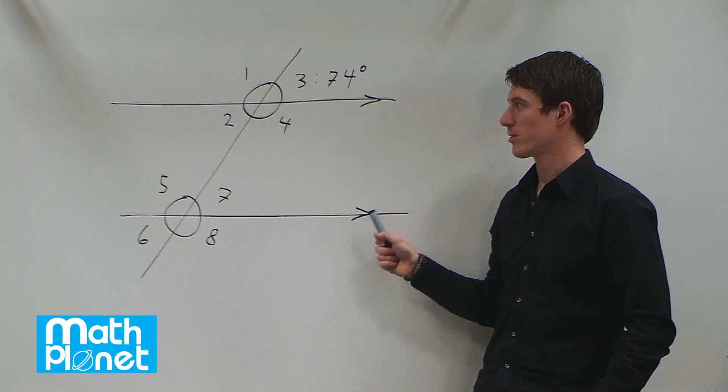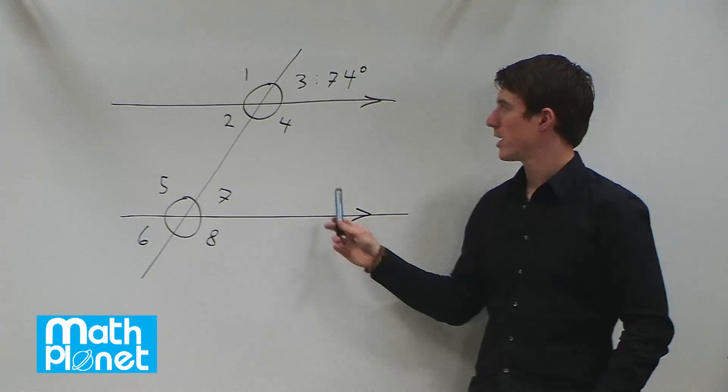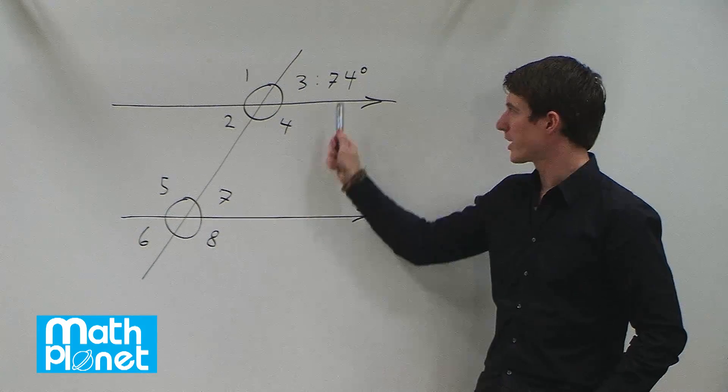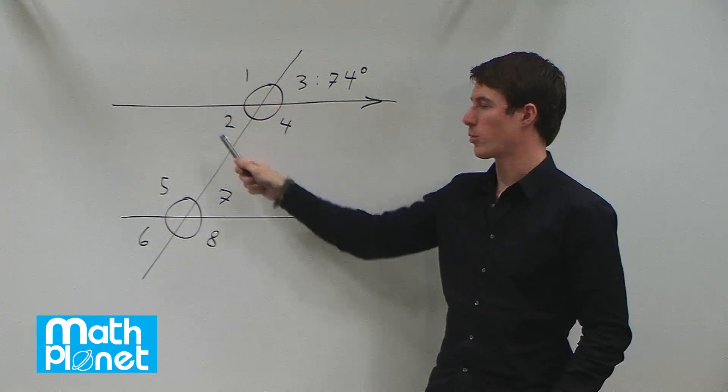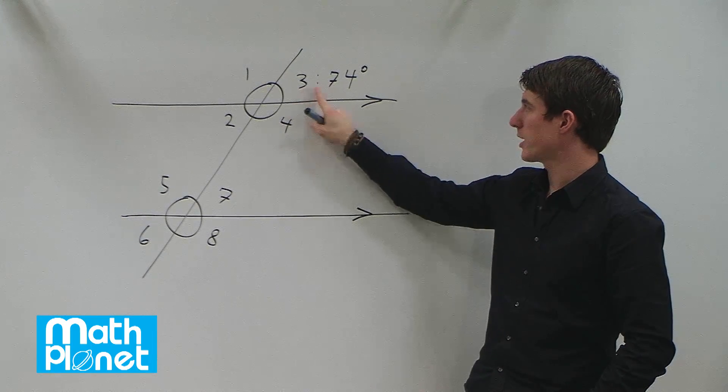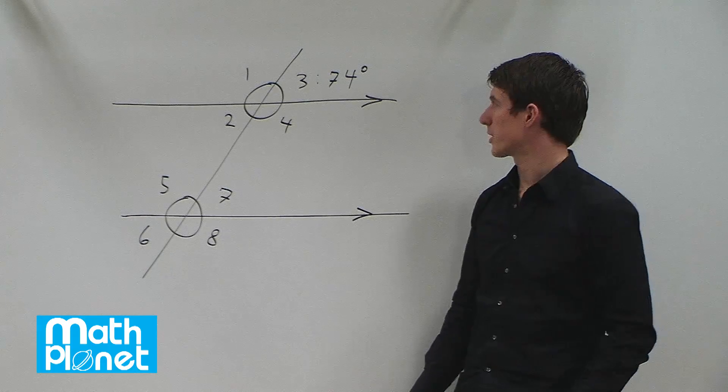Here we have two parallel lines, or a set of parallel lines, and there are eight angles drawn here. We're only given one and our task is to determine what the other seven are. We're given that angle 3 is equal to 74 degrees.